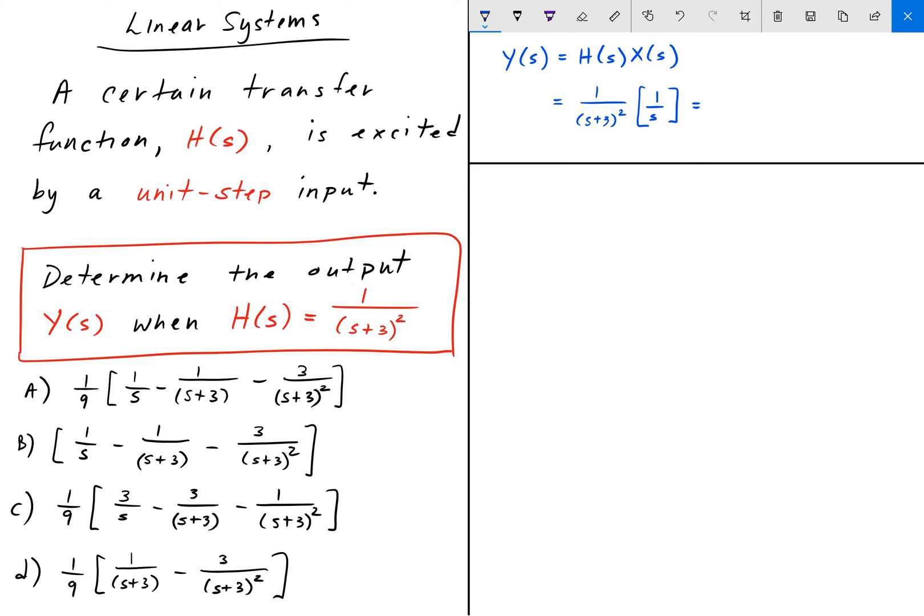So, that gives us, when we multiply them together, 1 over s(s+3)². And we have to turn that fraction into one of these four choices that we have here. And to do that, we're going to do, once again, partial fractions. So, this is going to be a partial fraction expansion.